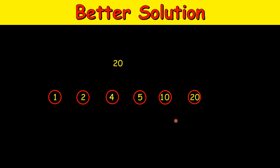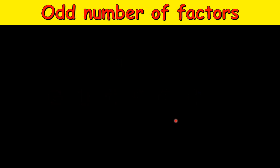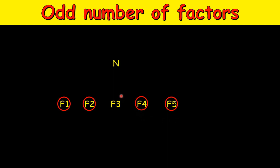But if a number has an odd number of factors, not all factors can be paired. Say a number n has 5 factors f1, f2, f3, f4, f5. Then f1 × f5 = n and f2 × f4 = n, but f3 has no other number to pair with — it must multiply by itself to equal n. That means f3 × f3 = n, so n must be a perfect square.